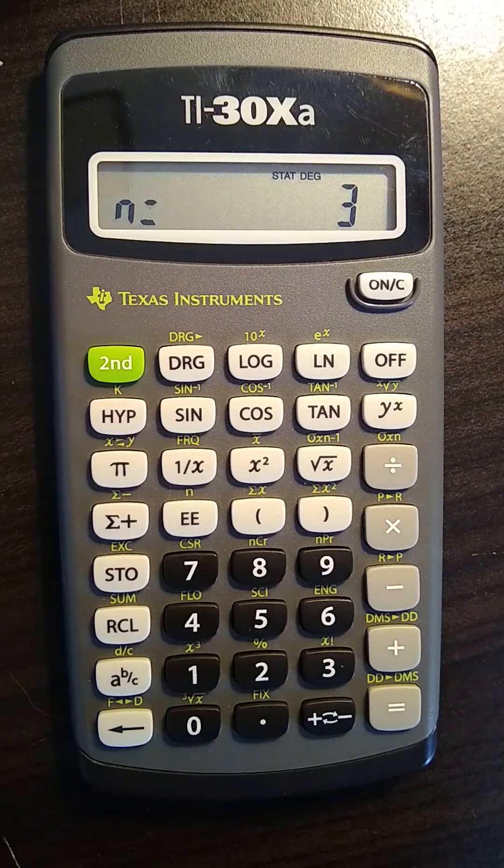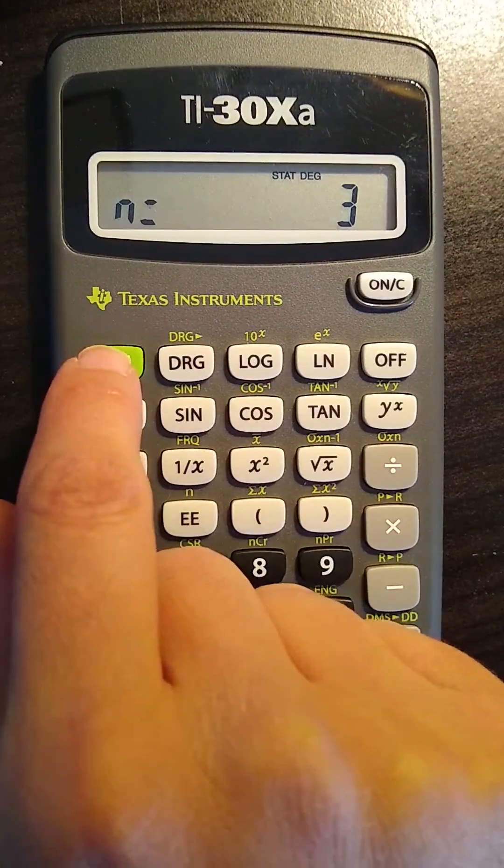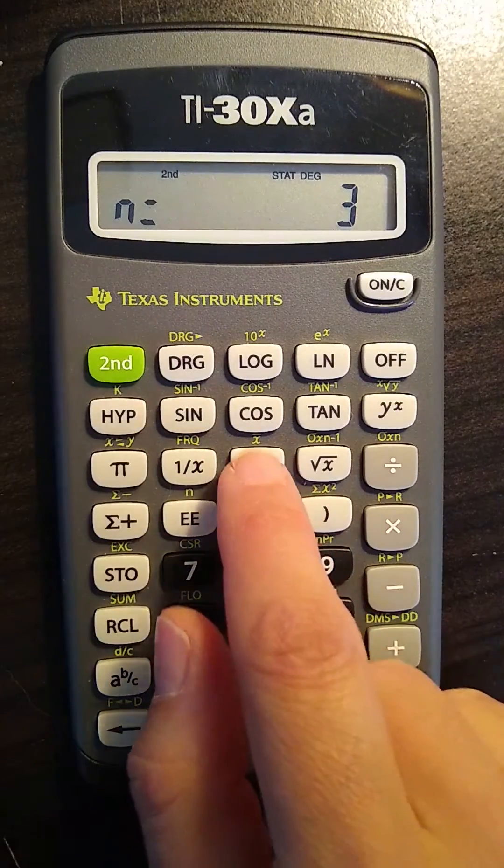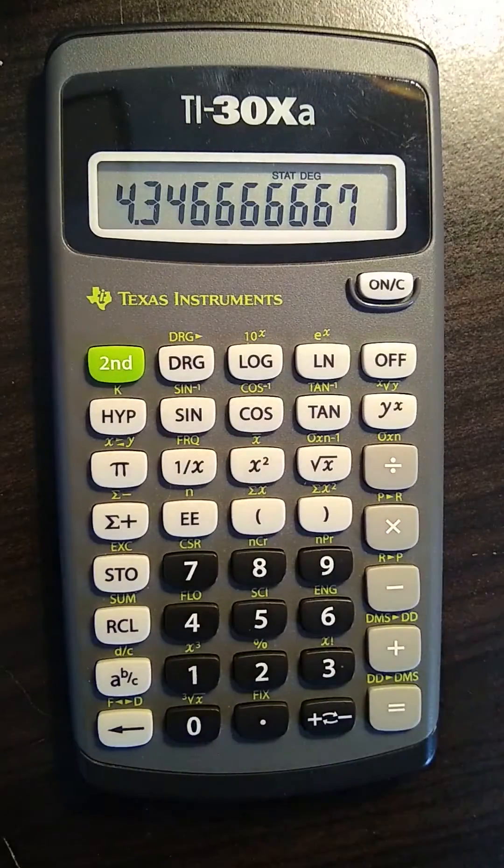If you want to find the average, it's as simple as pressing the second button and then the x squared. If you look right above that, it says x bar. That's the average.